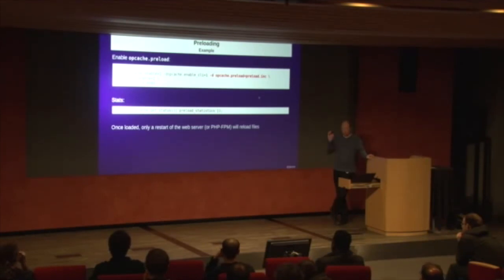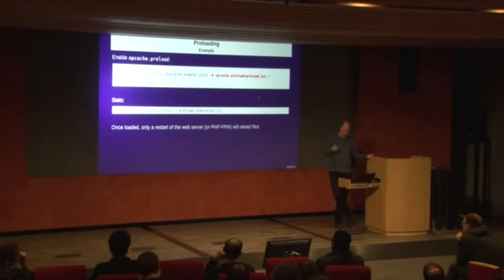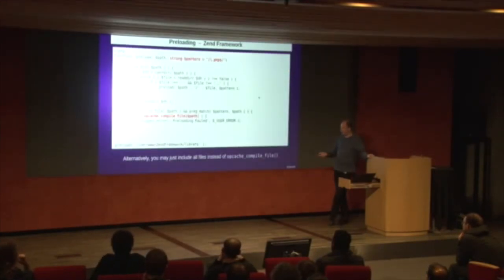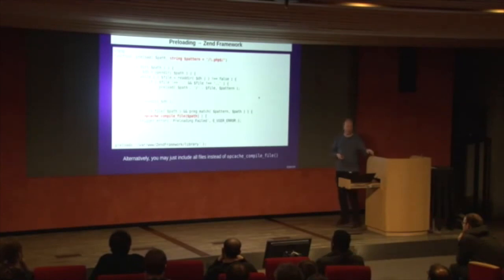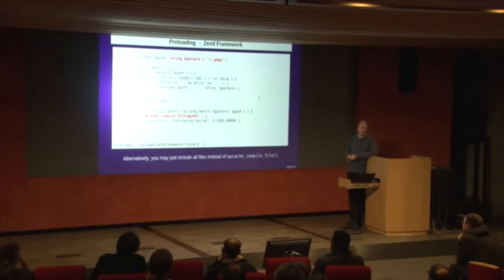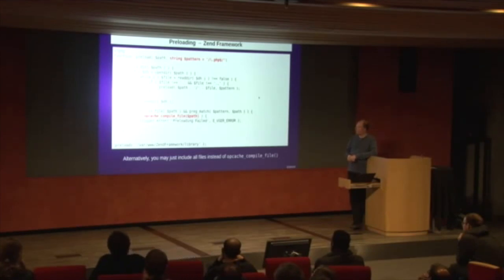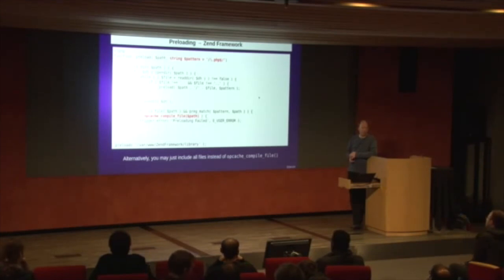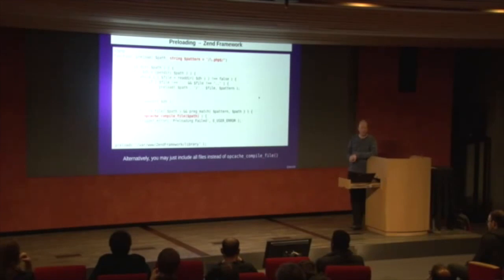When a web server starts up, PHP will execute this preload.inc file. In this case, I am calling a preload function on a specific path — I picked Zend Framework. This file recursively loops over all the files in a directory and calls opcache_compile_file with the path it finds. You could use require or include there and that would also work, but PHP 7.4.0 and 7.4.1 have issues with this, it doesn't work on Windows, and it might crash. So please use opcache_compile_file because that should not have these problems.